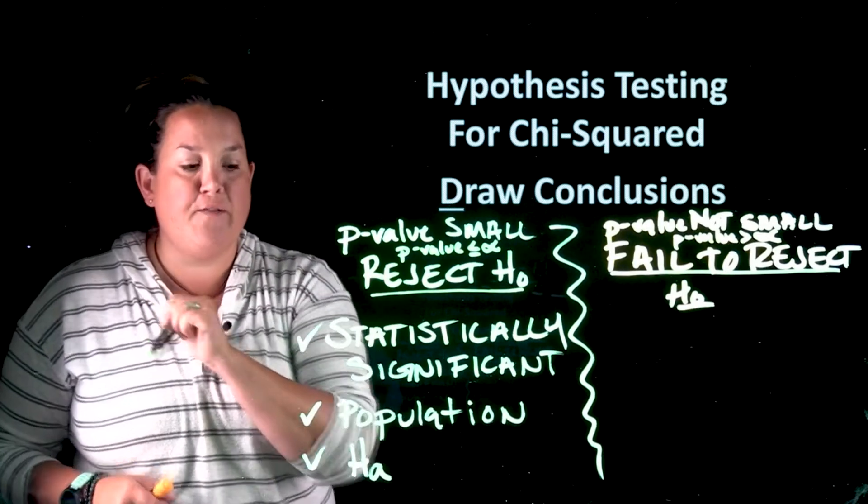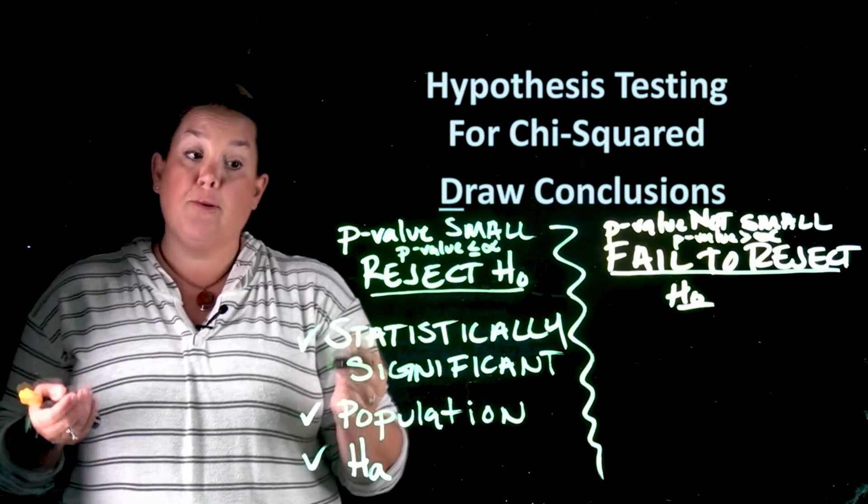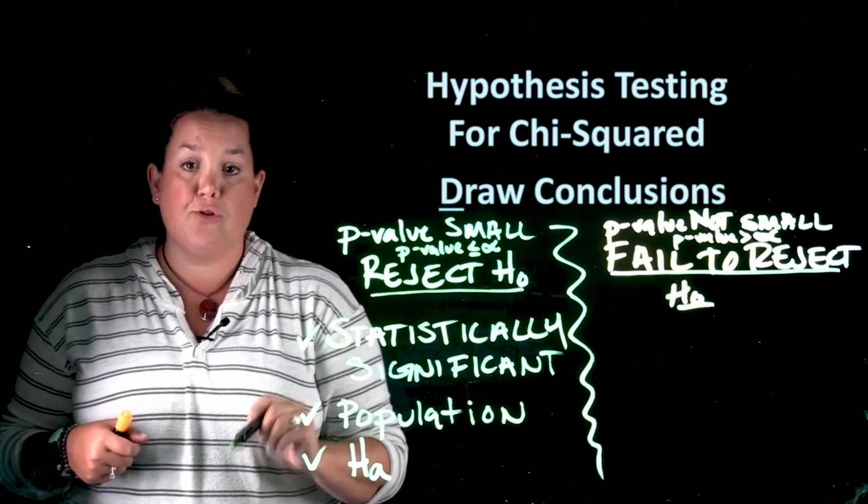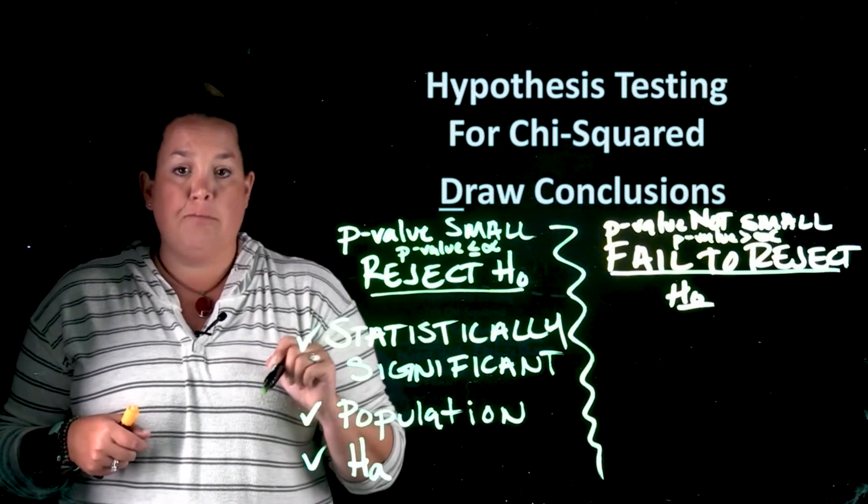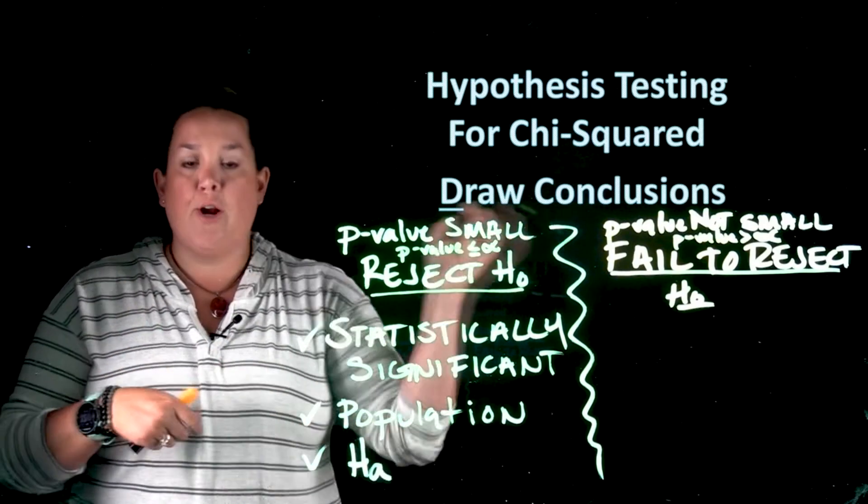So you're going to say statistically significant evidence for this population and you'll restate it for that alternative. So in other words, you might say there's statistically significant evidence that GVSU students have an association between year in school, freshman sophomore junior senior, and how much they talk to their parents. So that's what you would be looking at in this scenario.